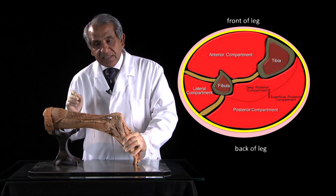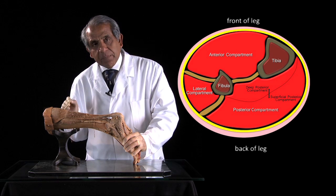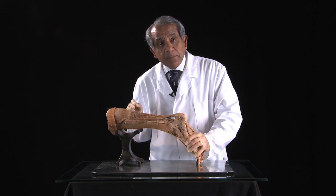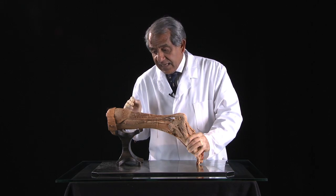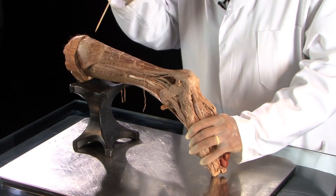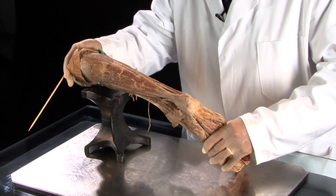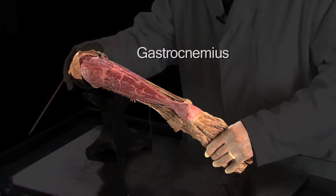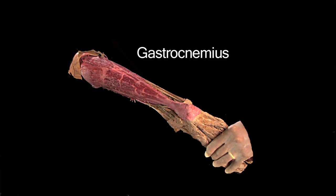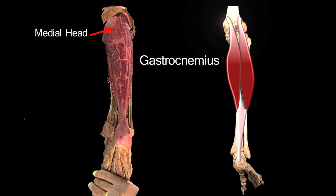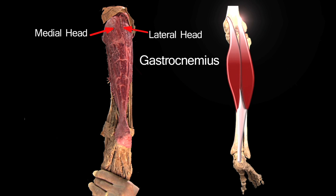The two parts are the superficial part of the posterior compartment, which is made up of three muscles. Gastrocnemius is the most posterior, and gastrocnemius in fact has two heads: a medial head and a lateral head.